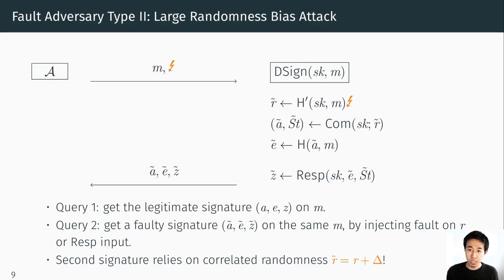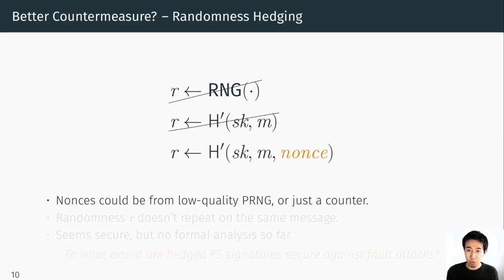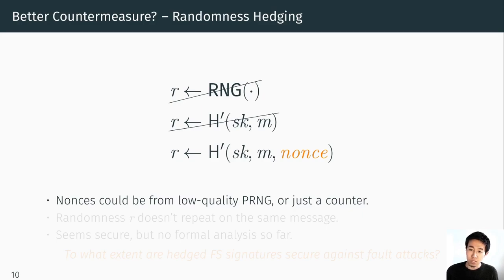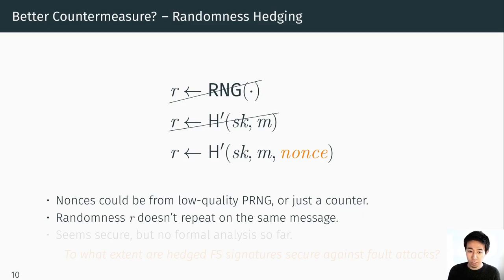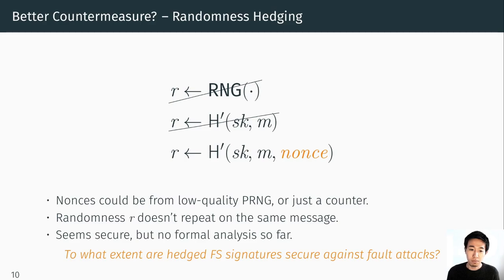To mitigate the risk of such fault attacks, those papers proposed a countermeasure called randomness hedging. Instead of just hashing the signing key and the message, we include some nonce as input to the hash function. This nonce could come from a low-quality pseudorandom number generator or just be a counter — we don't need it to strictly follow the uniform distribution. This is nice because we don't rely on a good random number generator, yet the randomness R doesn't repeat even when signing the same message. However, there has been no formal analysis so far: to what extent are hedged Fiat-Shamir signatures secure against fault attacks?